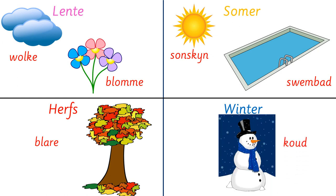Last one is winter. Let's say winter three times: winter, winter, winter. And we've got there a lovely frosty snowman with snow coming down. Because if it is snowing, then it is baie koud. So our word that we write there is koud, meaning it is cold. So draw your snowman and write the word koud. In somer you've got sonskyn and swembad. In herfs you've got blare. And in winter you've got koud.